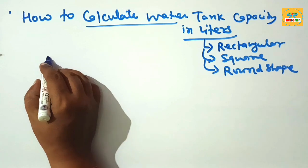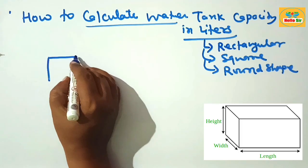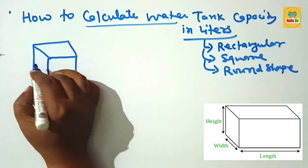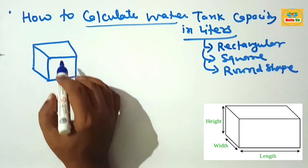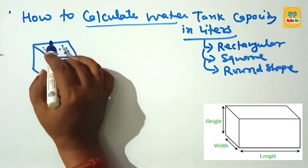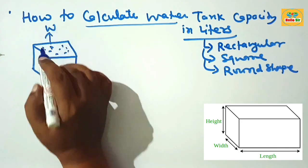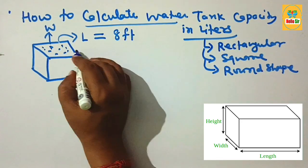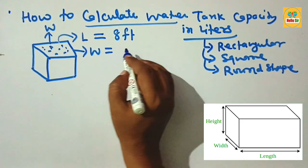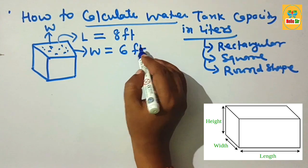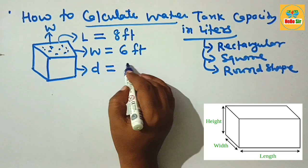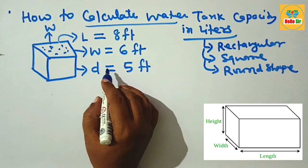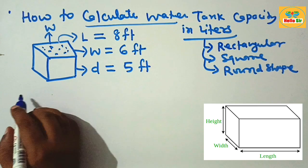First, we make a rough diagram. Suppose you have a rectangular water tank for storage of water. This is the rectangular water tank and this space is filled with water. The length of the water tank is about 8 foot, the width is 6 foot, and the depth is about 5 foot. These are the dimensions for the rectangular water tank.